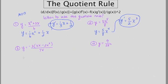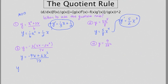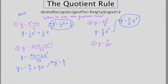In example three, if I distribute first I get negative 9x plus 6x squared all over 7x. Now if I use the mu rule — many over one — I end up getting negative nine-sevenths plus six-sevenths x. Very easy to take the derivative of this, so the derivative just ends up being six-sevenths.